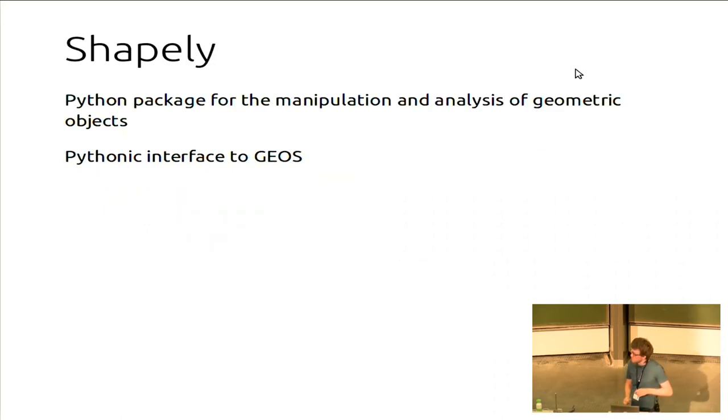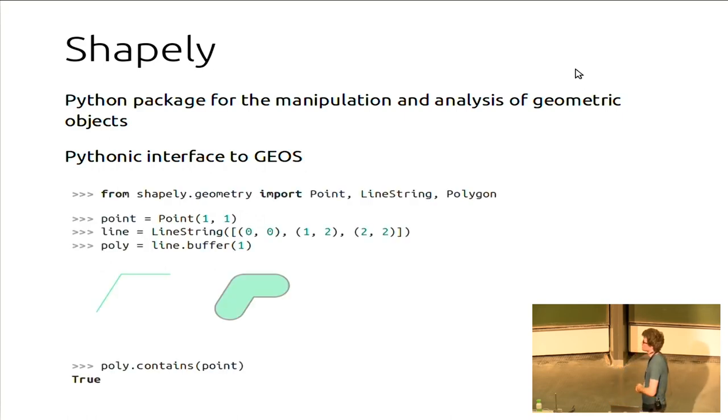I will talk a little bit more. What does Shapely? Shapely provides a Python package, which provides those features, those points, line strings, polygons, which under the hood uses GEOS for those operations. Very small example. For example, I can create a point, I can create a line, I create a polygon by buffering my line, and then you have many operations that you can do on them. For example, I want to check whether my polygon contains the point, and in this case, it's true.